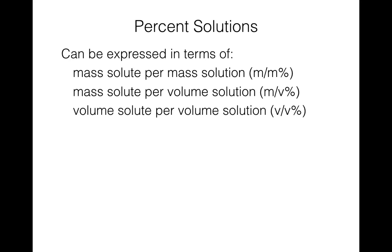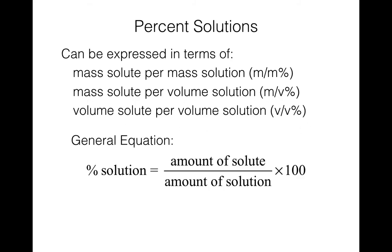For percent solutions, there are a few different ways to express them: mass of solute per mass of solution (m/m), mass of solute per volume of solution (m/v), or volume per volume (v/v). The general equation is to put the amount of solute divided by the amount of solution, times 100. The times 100 turns it into a percentage. When using this formula, be careful with units — if you use mass, make sure it's in grams; if you use volume, make sure it's in milliliters.